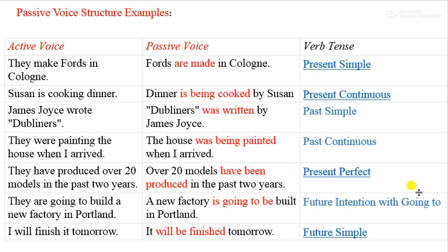For the 'going to' future: active voice — 'they are going to build a new factory in Portland'; passive voice — 'a new factory is going to be built in Portland.' For future simple: active voice — 'I will finish it tomorrow'; passive voice — 'it will be finished tomorrow.'